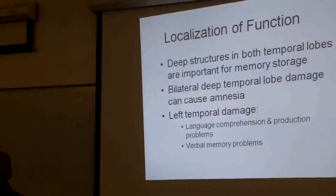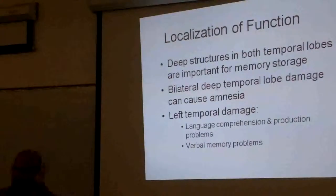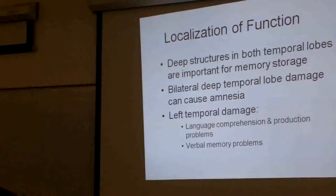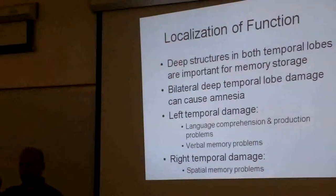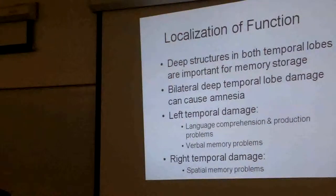Left temporal lobes, specifically the left side, are used for language comprehension. And so the back section of the temporal lobe is for language comprehension and verbal memory problems. And the right temporal lobe is for spatial memory. So both are required for memory, but they have some distinct functions.